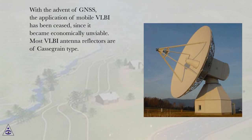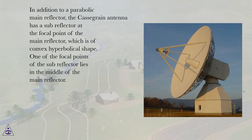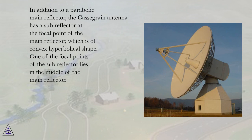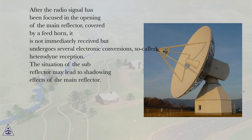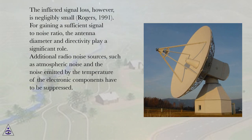Most VLBI antenna reflectors are of Cassegrain type. In addition to a parabolic main reflector, the Cassegrain antenna has a subreflector at the focal point of the main reflector, which is of convex hyperbolical shape. One of the focal points of the subreflector lies in the middle of the main reflector. After the radio signal has been focused in the opening of the main reflector and covered by a feed horn, it is not immediately received but undergoes several electronic conversions — so-called heterodyne reception. The situation of the subreflector may lead to shadowing effects of the main reflector; the inflicted signal loss, however, is negligibly small (Rogers, 1991).